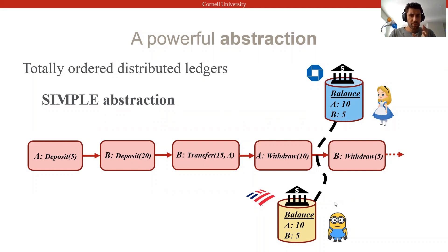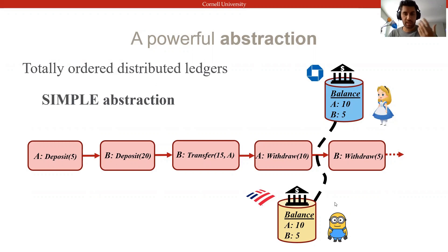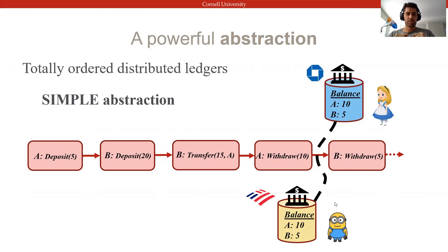This is a really powerful abstraction because it allows mutually distrustful parties to share and replicate data in a way that is resilient to some amount of compromise or malicious behavior and still agree on a common view of the system state.